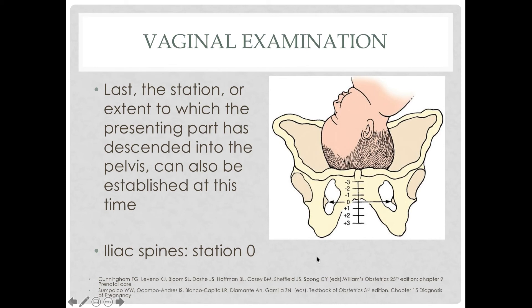When doing vaginal examination, we can also determine fetal station by assigning arbitrary numbers in the birth canal with zero set at the level of the ischial spines. If the biparietal diameter of the fetal head is at the level of the ischial spines, we call that station zero. Anything above station zero is negative one to negative five, and anything below is positive one to positive five.